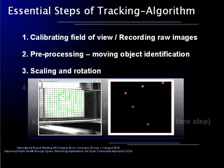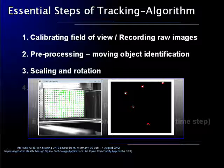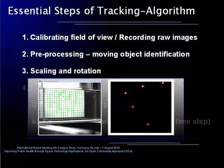At first, it is essential to capture some calibration images to determine the alignment of each camera in respect to the volume of interest, as well as to capture some background images. Then, the raw images of the moving organisms will be recorded, and after this, the preprocessing provides the identification of moving objects in the raw images.